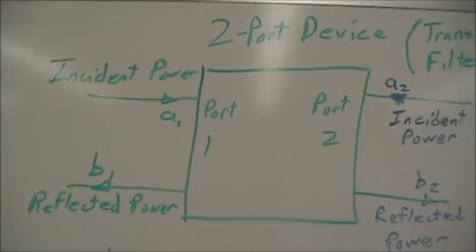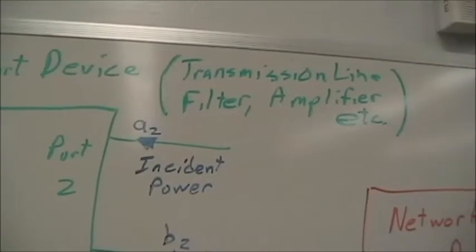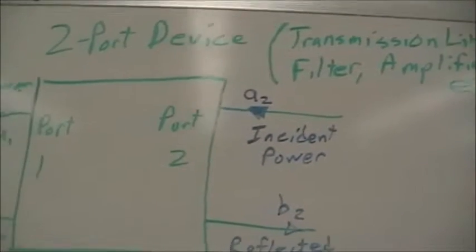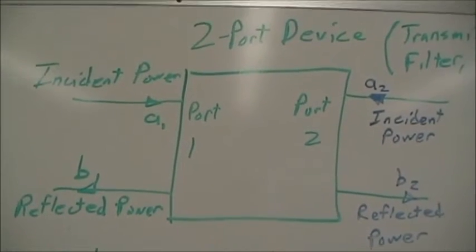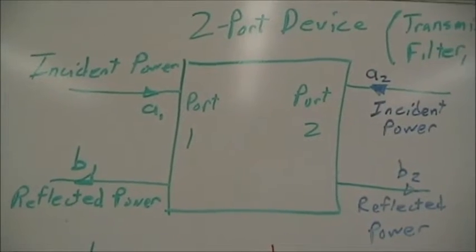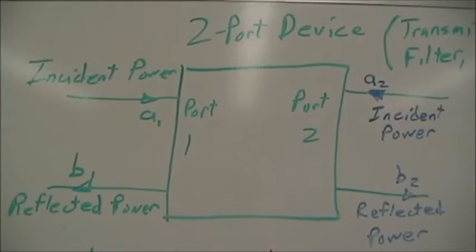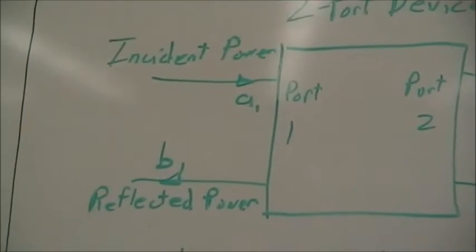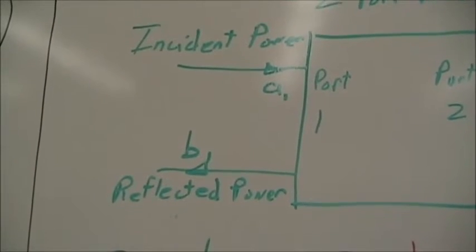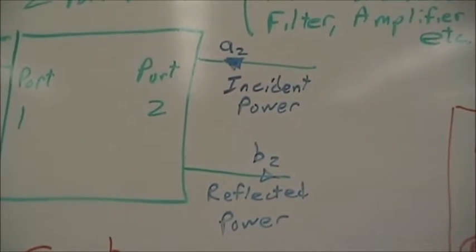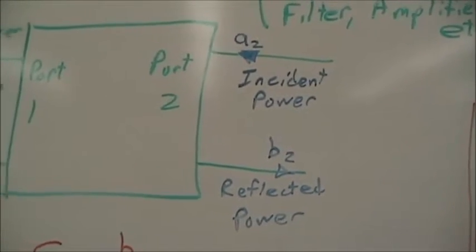For a two-port network, devices like transmission lines, filters, and amplifiers, we have an input port and an output port. On the two-port network we now have A1 in, B1 reflected, but also A2 in and B2 reflected on the other port.